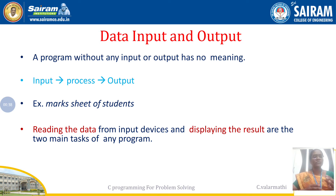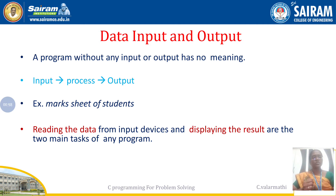After processing, the result should be displayed on some output device — it may be on a screen or printed in some format. After the logic, the results come out and those results are considered as output. So this is the flow of our logic: first we get inputs, then we write the logic, and then we consider the output.